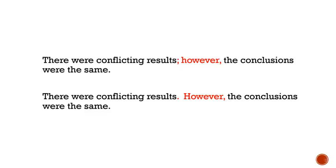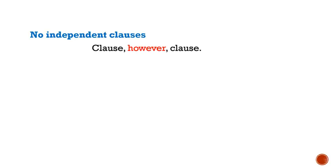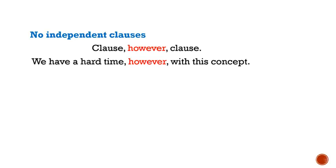These two examples mean exactly the same, but the first uses a semicolon between the independent clauses, whereas the second puts a period at the end of the first sentence. You'll need to figure out if your field tends to use a semicolon or a period. Also, be warned about using transition words like 'however' inside a sentence: 'We have a hard time, however, with this concept.' Here, 'we have a hard time' is an independent clause, but 'with this concept' is not, so 'however' is surrounded by commas only. You should never use a semicolon unless both clauses are independent clauses.